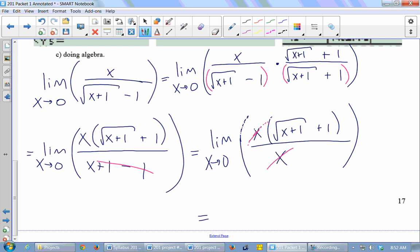Now what happens? Once these x's have canceled, what happens if I try to put a 0 in for x into the remaining expression? We get 2. When you put in a 0 here, you get the square root of 1 is 1 plus 1 is 2. So our guess about what that limit was was correct.